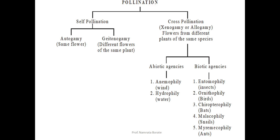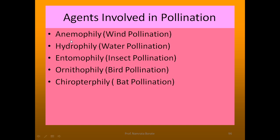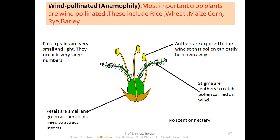Biotic agencies include entomophily, that is insect pollination; ornithophily, that is bird pollination; chiropterophily, meaning bat pollination; malacophily, meaning snail pollination; and myrmecophily, meaning ant pollination. In this topic we will concentrate on anemophily, hydrophily, entomophily, ornithophily, and chiropterophily. Let's start with the first — wind pollination.